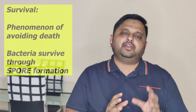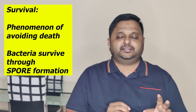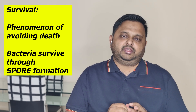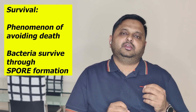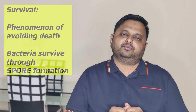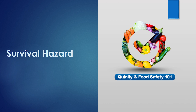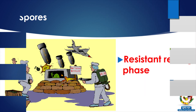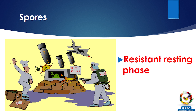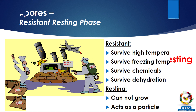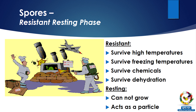We are now coming to the third and last topic of this video: the survival hazard. Survival is the phenomenon to avoid death. Very few microorganisms have the ability to survive, and they do so through spore formation. Spores are a resistant resting phase of bacteria. They can survive high temperatures, freezing temperatures, chemicals, and dehydration. At the same time, spores cannot grow — they are like particles with no ability to grow, so they are only a survival mechanism, not a multiplication mechanism.